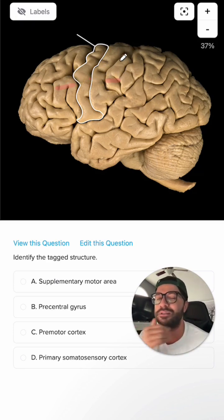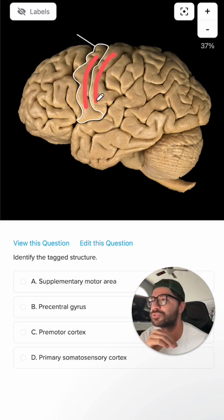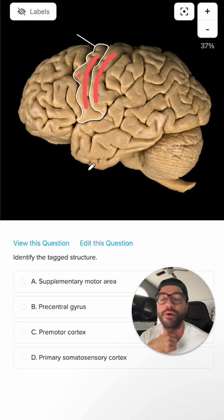Found just anterior to the central sulcus, we have the precentral gyrus. And posterior to it, we have the postcentral gyrus. The precentral gyrus is the primary motor cortex, and the postcentral gyrus is the primary somatosensory cortex.